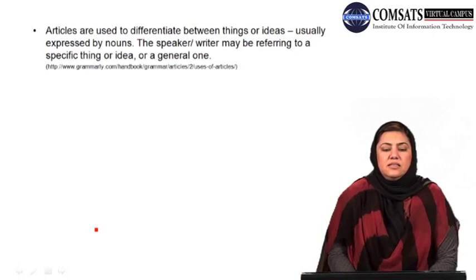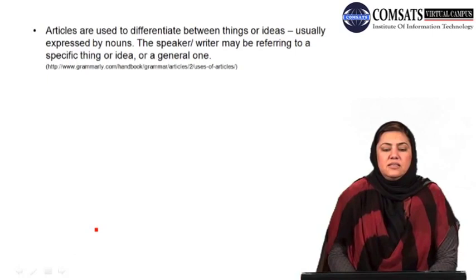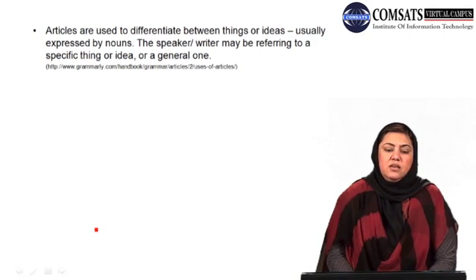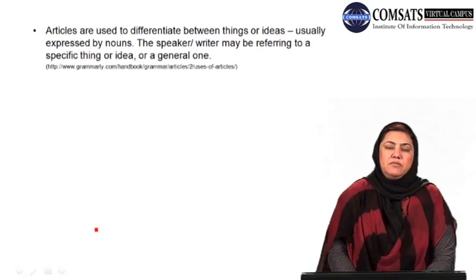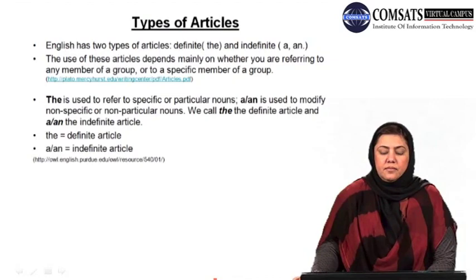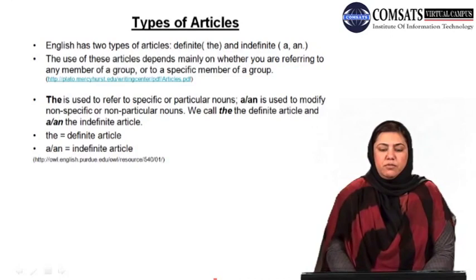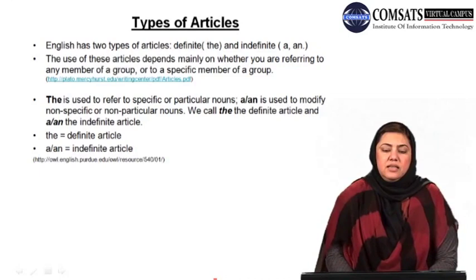Dear students, articles are used to differentiate between things or ideas, usually expressed by nouns. The speaker or the writer may be referring to a specific thing or idea or to a general one. It is with the help of articles that this differentiation is made — whether it is a general or a specific thing or idea. Mainly, English has two types of articles: definite and indefinite. The definite article is 'the' and the indefinite articles are 'a' and 'an'.